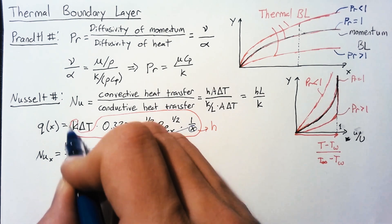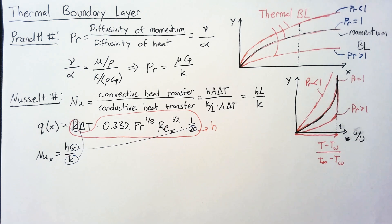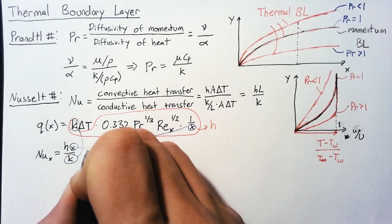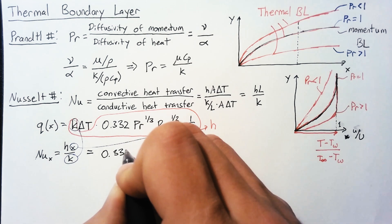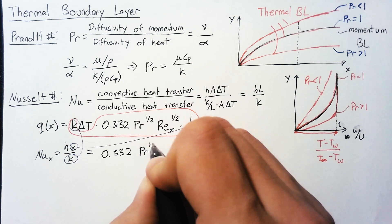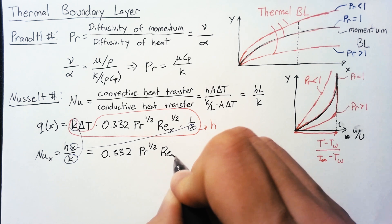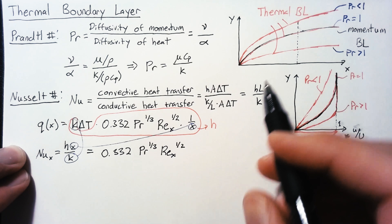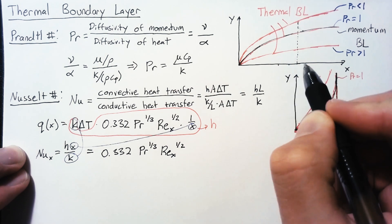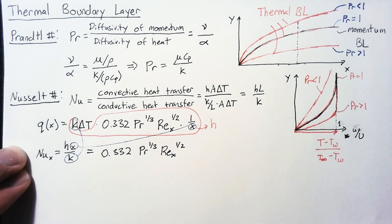What we end up with is a relatively simple term of 0.332 times the Prandtl number to the 1 third times the Reynolds number to the 1 half. So this Nusselt number tells us something about the heat transfer at a specific point in X. It's not over the entire flat plate, it's over a specific point.